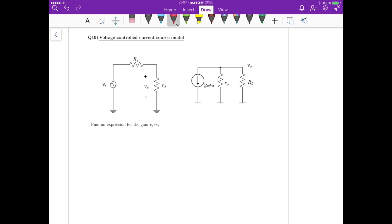We need to find an expression for the gain Vout over Vs. We have Vs here, which is our input, and Vout is right here. There are some steps we can use to determine this relationship.